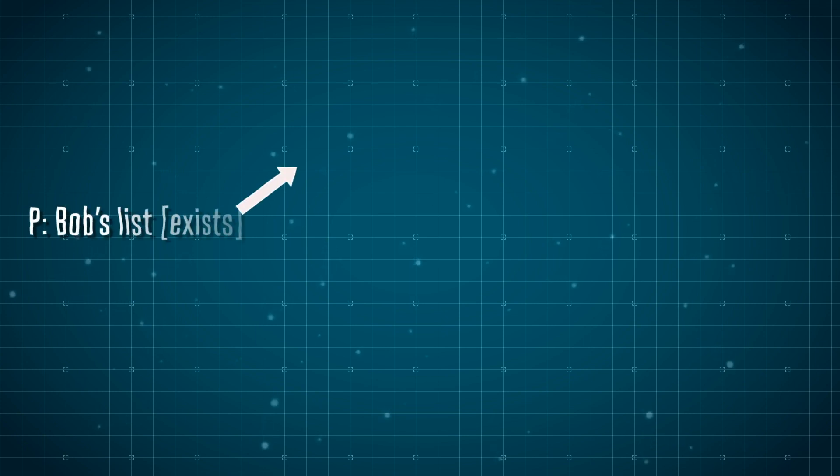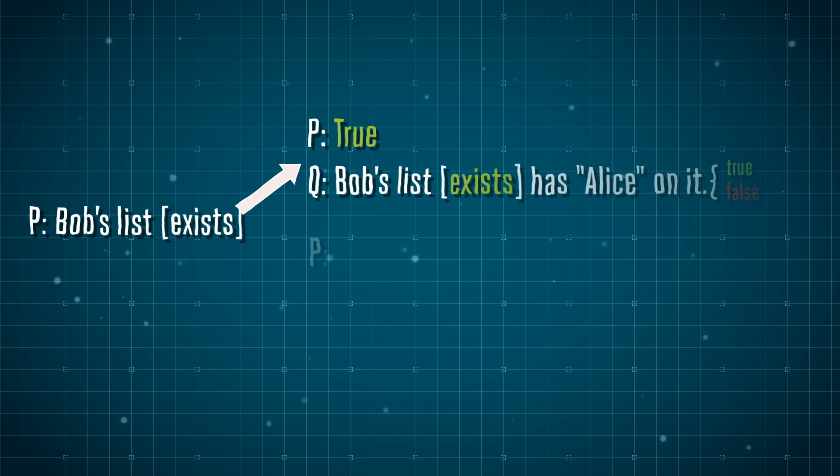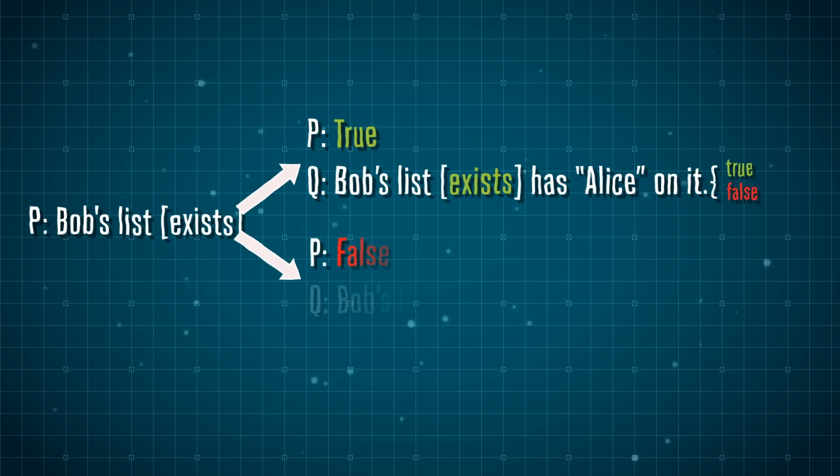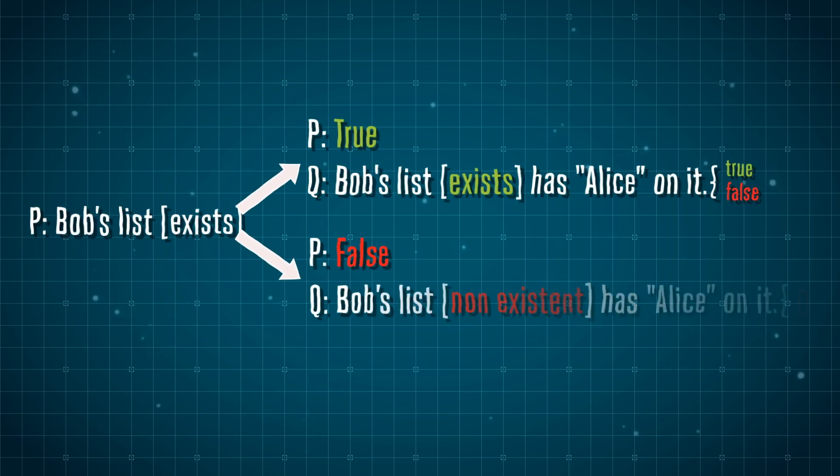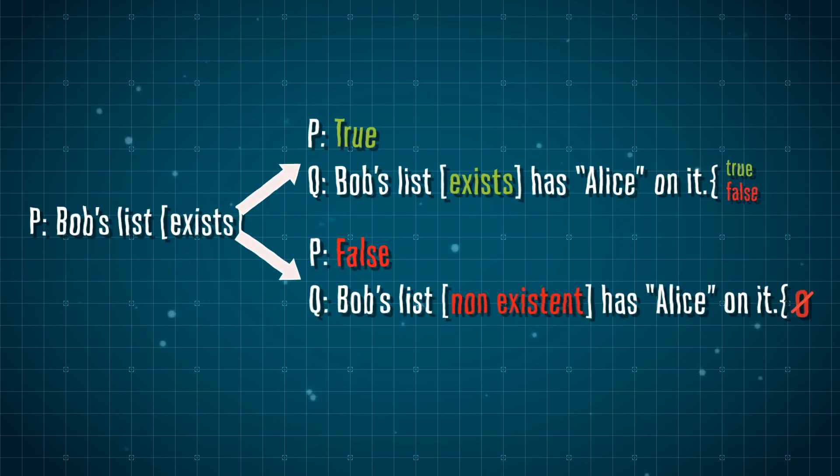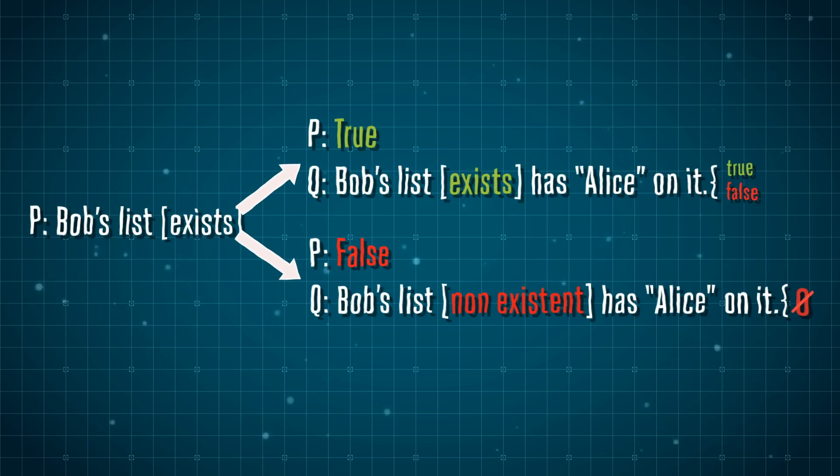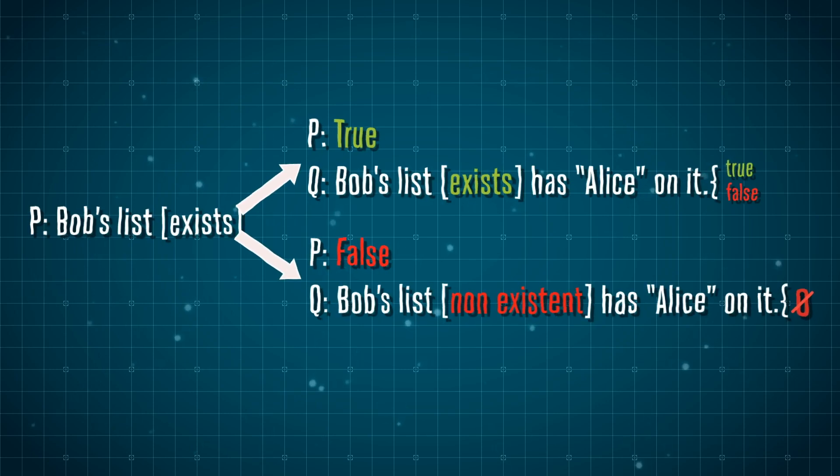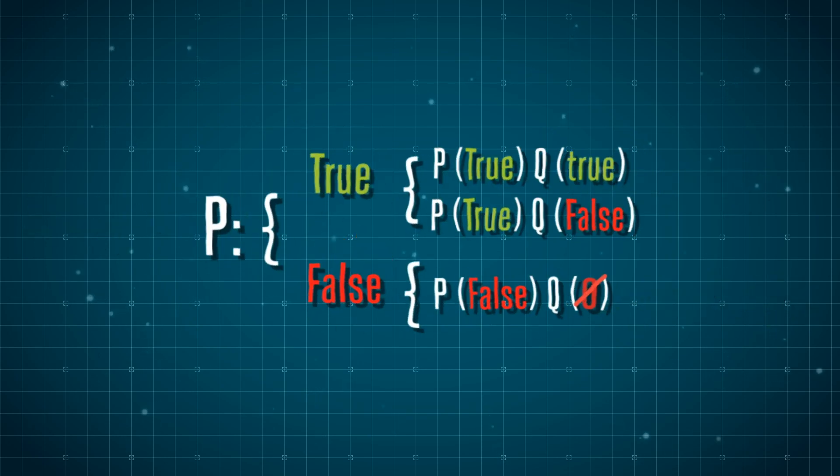Let's look at Bob's list for a simpler example. We'll say the proposition 'Bob's list exists' is Proposition P. Well, if that's true, then we can ask proposition Q: does it have Alice on it? And we can answer true or false. But if it doesn't, well, we don't have an answer.